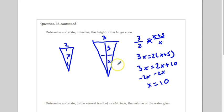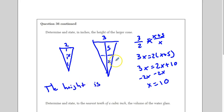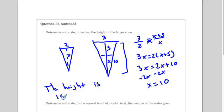So we want to find the height of the larger cone. If x is 10, the whole height is going to be fifteen inches. Notice how we put our units here.